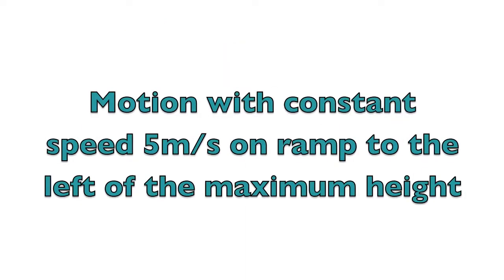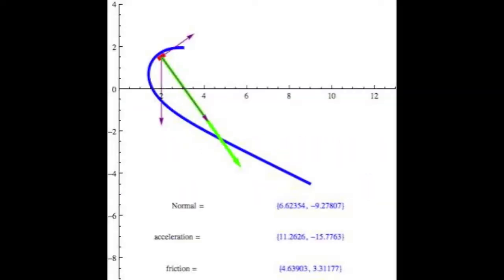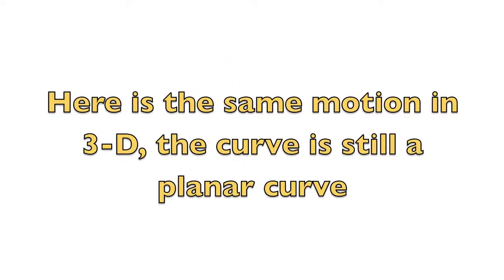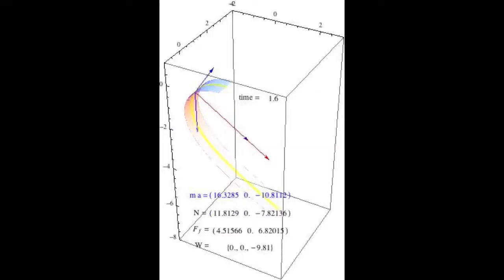This is how the motion happens on the ramp to the left of the maximum height. We can see how Newton's second law holds true. In each one of these images, we are showing all the forces that act on the block and the acceleration vector. We are taking the mass to be one.